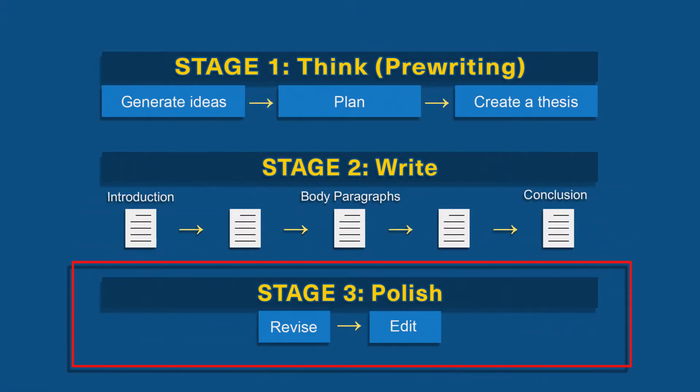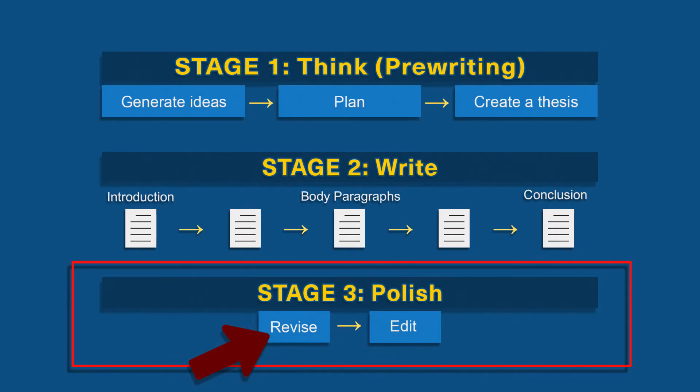Stage 3 is about polishing your writing. Part 7 in the series will show you how to make your writing better. Essentially, you go over your draft to improve your ideas and your writing. First, you revise your writing — you focus on improving your ideas, making sure what you wrote is logical and clear. You go over each paragraph to make sure you chose the right words, your sentences are saying what you meant to say, and your logical thinking is clear. Once you're happy with your ideas, you edit your document. You go over everything again, but this time you're trying to improve grammar and writing issues. You check your spelling, verb tenses, prepositions, punctuation, and so on.